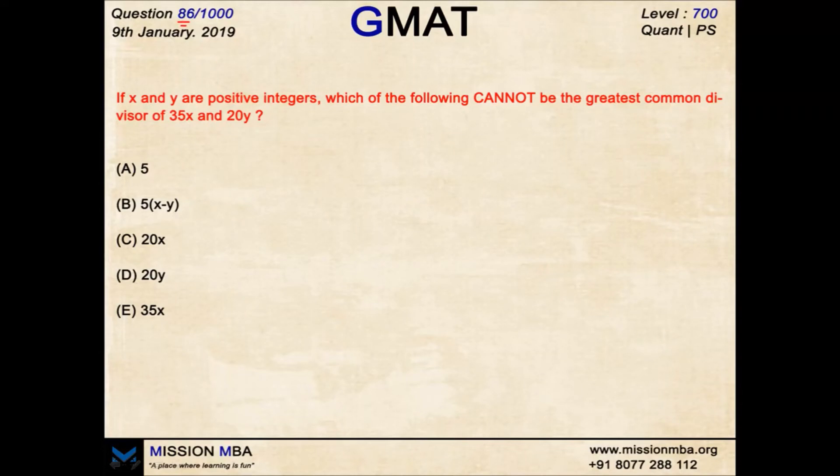Hello and welcome to question number 86 of Dilito's GMAT. Let's have a look at the question. If X and Y are positive integers, which of the following cannot be the greatest common divisor of 35X and 20Y? Be careful of these kind of question stems. Cannot be something.